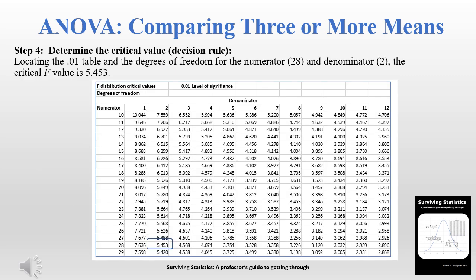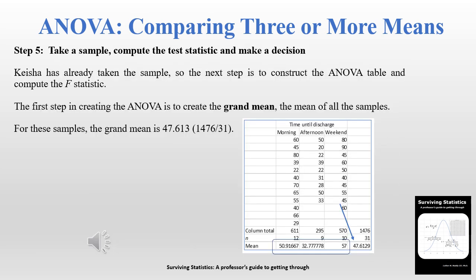On the 0.01 table, with numerator degrees of freedom of 2 and denominator degrees of freedom of 28, we end up with a critical value of F = 5.453. We're now at step five: take a sample — already done — compute the test statistic, and make a decision.